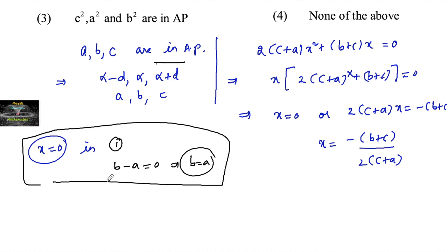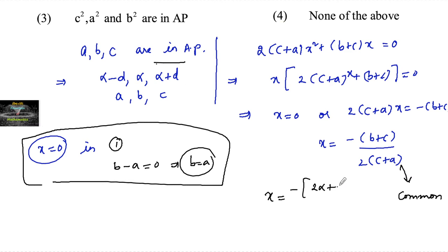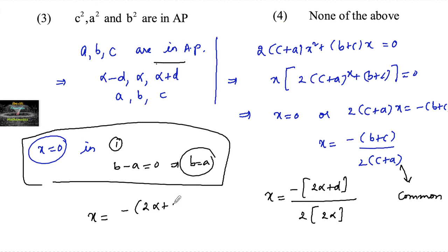So we consider the other solution: x = −(b plus c) divided by 2(c plus a) as the common root. Substituting b = α, c = α+d, we get −(b plus c) = −(2α+d), and c plus a = 2α, so x = −(2α+d) divided by 4α.